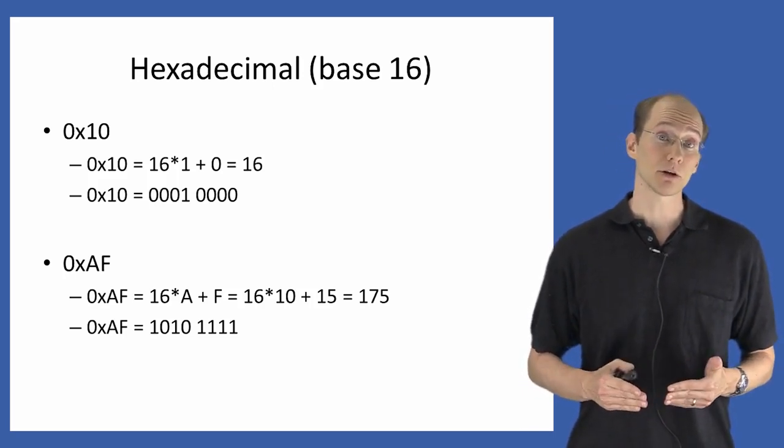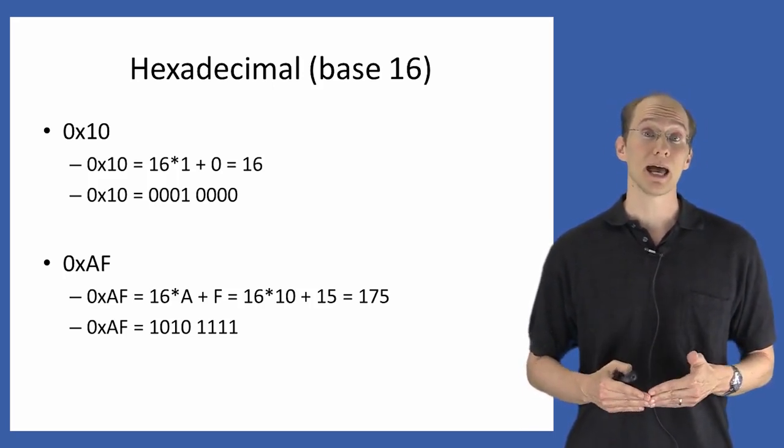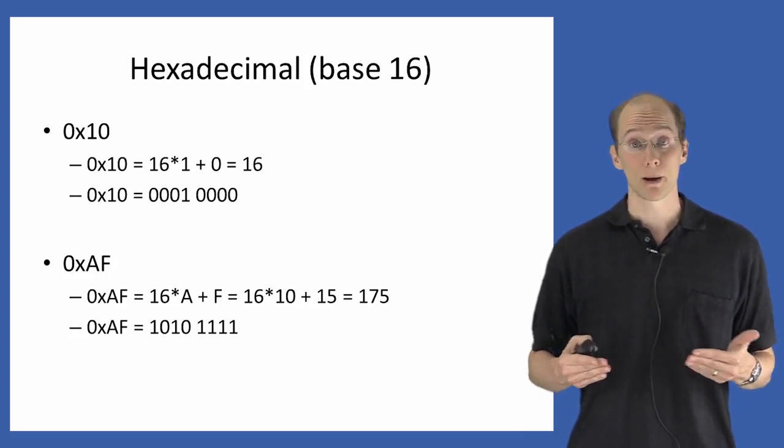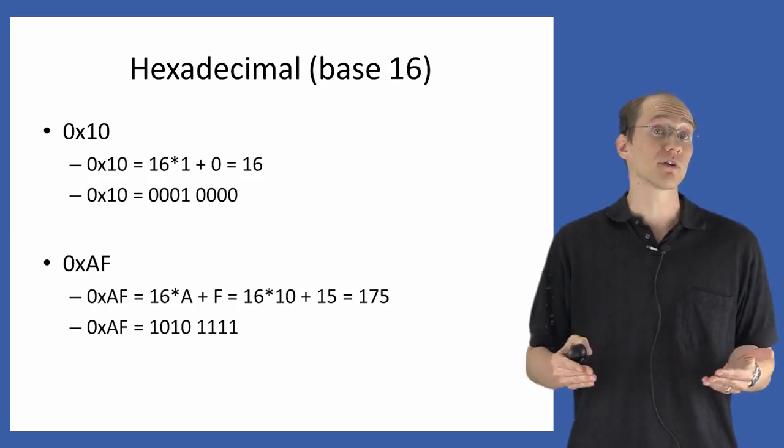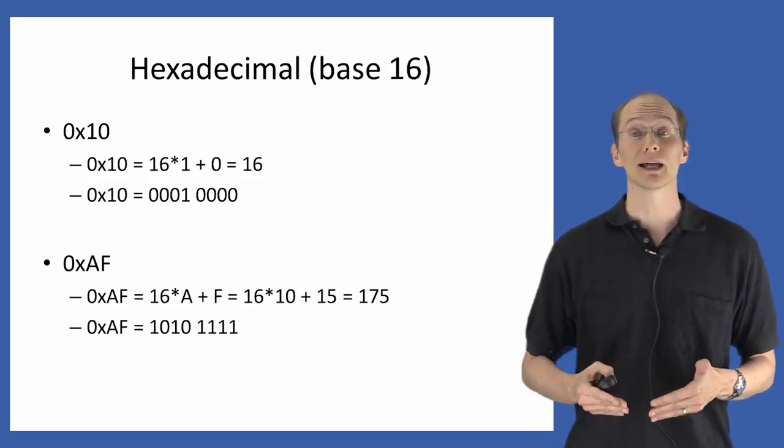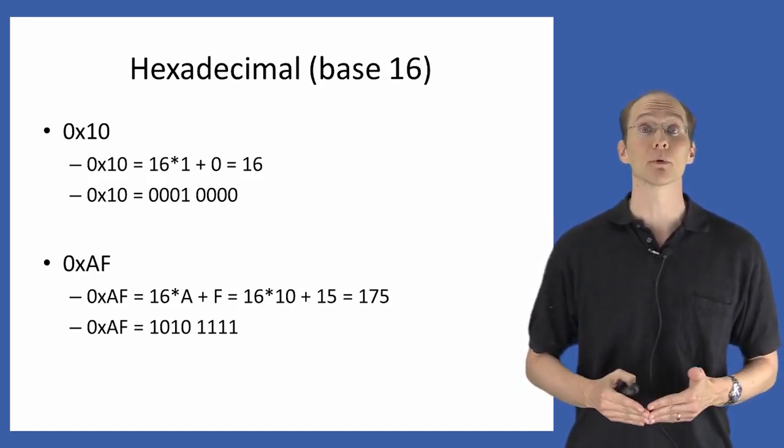And again, if you write that out in binary, then the hex number AF is equal to the binary number 10101111. And you can check for yourself that viewed as a number in binary that is indeed equal to the decimal number 175.